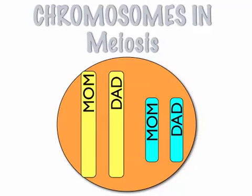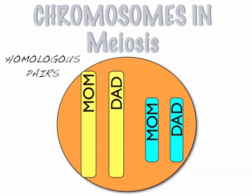In meiosis, you don't just talk about individual chromosomes — you actually talk about pairs of chromosomes, because you have a chromosome set of 46 chromosomes. You really have 23 pairs of homologous chromosomes. You got half your chromosomes from mom — 23 — and the other half from dad — 23 — to make your full set.